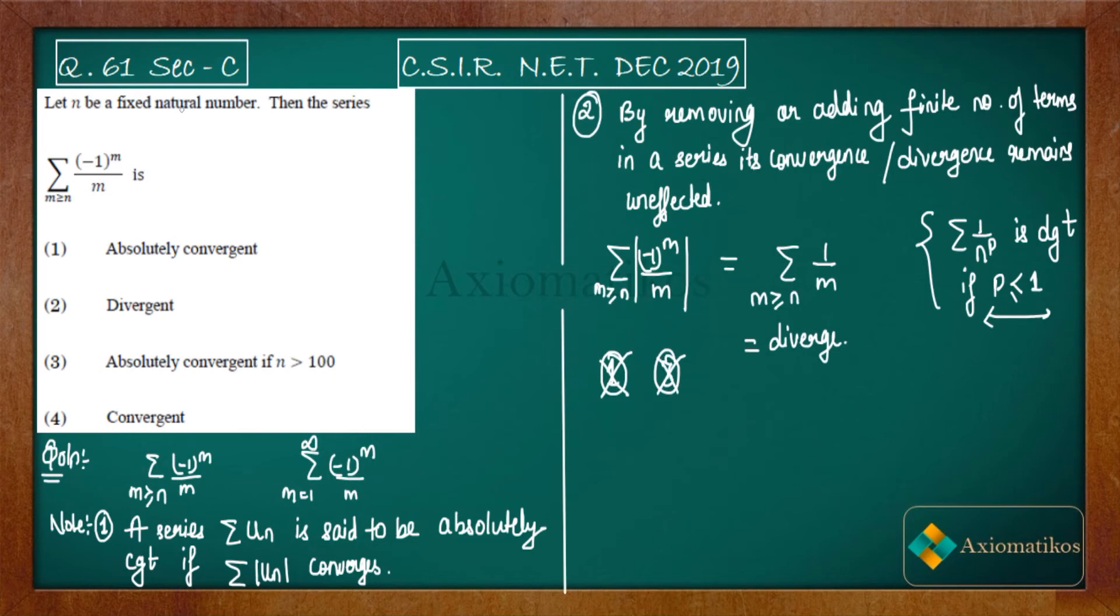Now let us talk about second and fourth. We have this series: summation (-1)^m / m where m is beginning from n. n is a fixed number. Now you know that this is an alternating series—where the sign changes with every term.